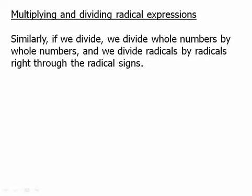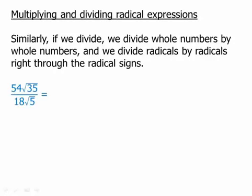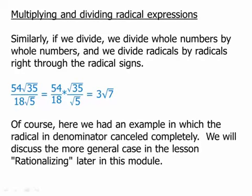Similarly, if we divide, we divide whole numbers by whole numbers and we divide radicals by radicals right through the radical signs. We separate it out into whole numbers and radicals. As it turns out, 54 is a multiple of 18, so that will simplify to 3. We can divide 35 divided by 5 right through the radical and we get 3√7. We had an extraordinary coincidence - an example in which the radical in the denominator canceled completely. In general, the radical in the denominator will not cancel. That's a large topic devoted to the video on rationalizing, which is a couple lessons from now.